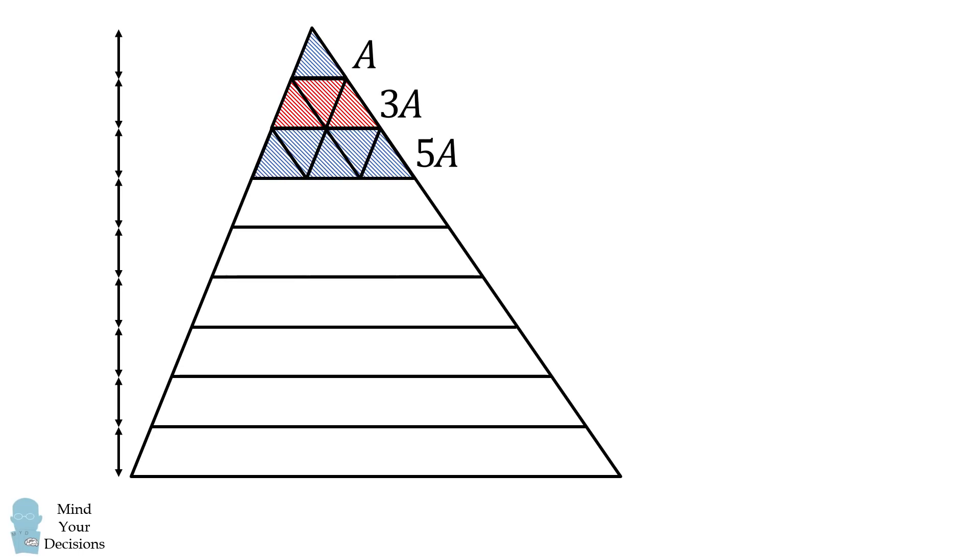We can now continue the pattern to solve for the area of each stripe. The next stripe will have an area that's equal to 4 squared minus 3 squared. That's equal to 7 multiplied by A. So this will be equal to 7A. We can also calculate it by putting seven of these small triangles in there. We now see a pattern.